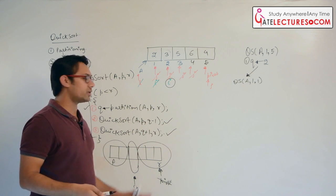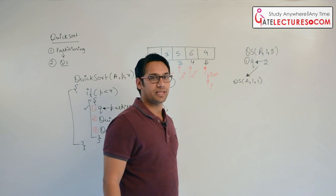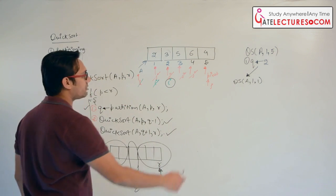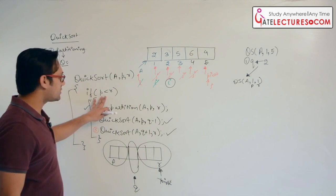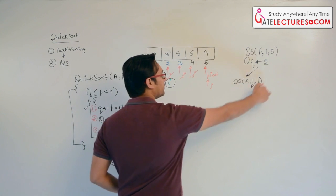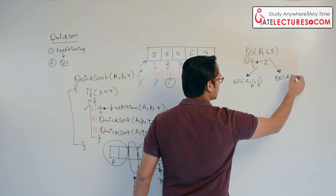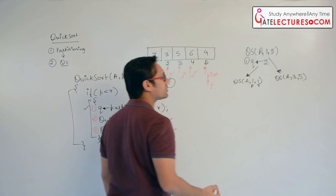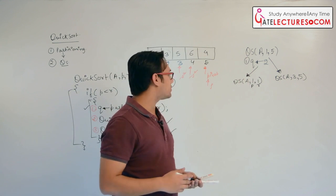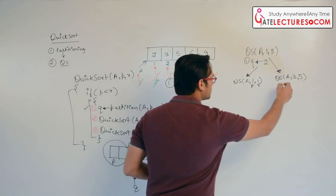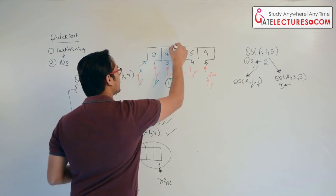We go back to the previous case and make the call for line number 3: quicksort(a, q+1, r) = quicksort(a, 3, 5). In this recursive call, we again have to do a partitioning procedure to find the value of q. We apply the partition procedure to the subarray which now contains 3, 4, and 5.